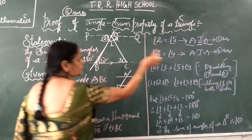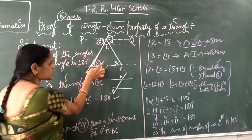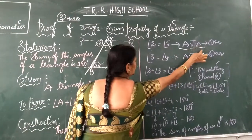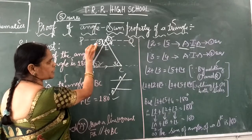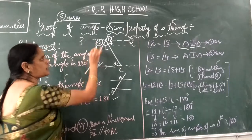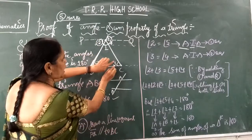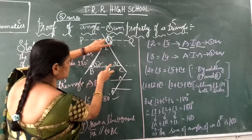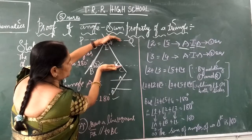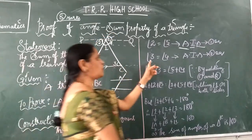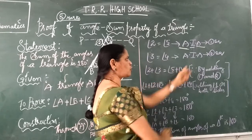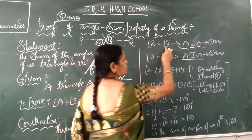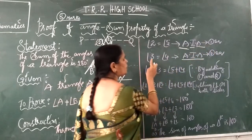Both angles are inside, so that is an interior angle on either side of the transversal line — that is why this is an alternate interior angle. Here, angle 2 and angle 5 are alternate interior angles. In the same way, angle 3 and angle 4 are alternate interior angles on either side of the transversal line, both interior. Therefore angle 2 is equal to angle 5, and angle 3 is equal to angle 4.